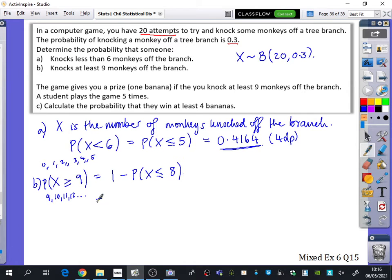Okay, so if you have a graphics calculator, I would type in my lower bound on the graphics is going to be 9, and my upper on the graphics is going to be 20. But I'm going to do it with the classwiz kind of mode. Less than or equal to 8. So it would be 1 minus 0.8867 when it rounds.